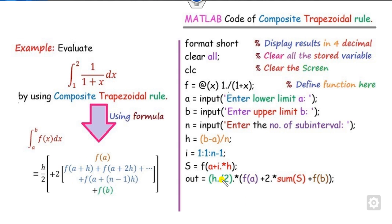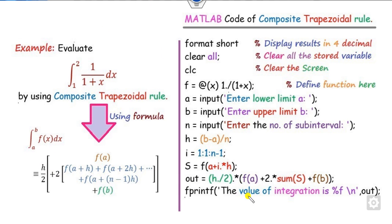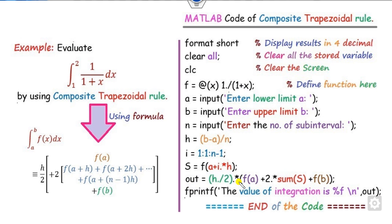Now we write the expression for the trapezoidal rule. It is H over 2 times F of A plus 2 times the sum of intermediate values stored in S plus the last value F of B. Finally, print the result: the value of the integration is displayed using the format specifier, stored in the variable 'out'. This is the complete MATLAB code.